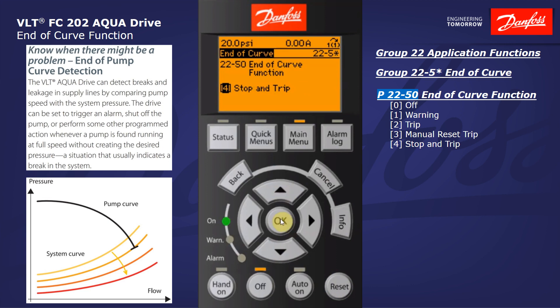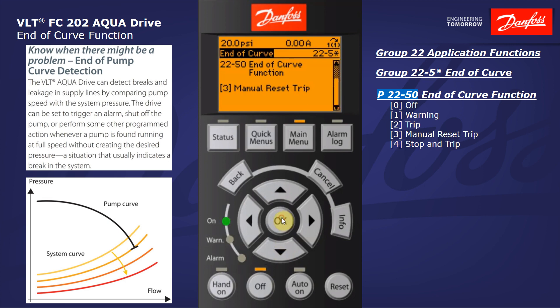Stop and trip — the difference here is that rather than immediately tripping and the motor coasting to a stop, the drive will actually follow a controlled ramp down to stop prior to tripping. We also have off, in which of course no event would be executed, and warning. A warning in the Danfoss Drive will not prohibit operation — it will just continuously display the warning for the end of curve, however it won't stop running. So those are my choices for parameter 2250, and again I'm going to select manual reset trip.